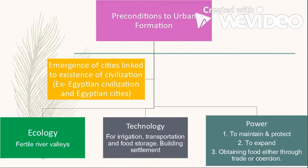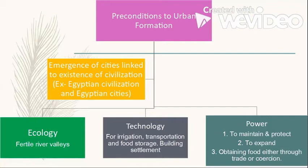The second precondition is technology. When population increases, you need to produce more food and carry out various activities like making buildings. Technology is required for this — irrigation for more food, transportation for transporting goods, and food storage systems. Technology is a precondition to urban formation that is not so much required for a rural settlement.